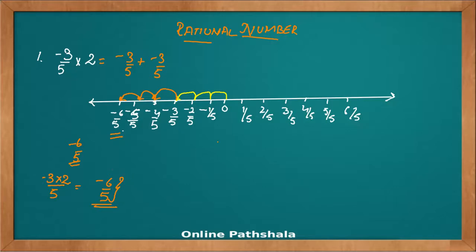Now let's look at the second example, which uses the same number minus 3 by 5, but instead of multiplying it with a positive integer, I am multiplying it with a negative integer, that is negative 2.